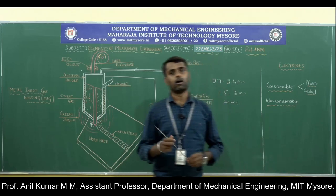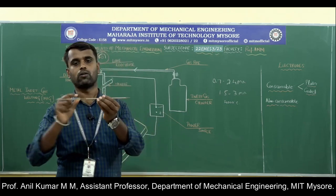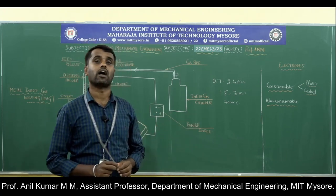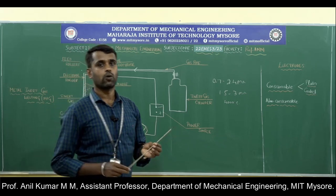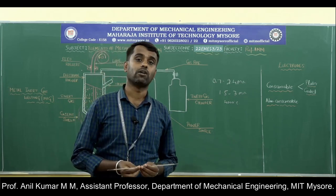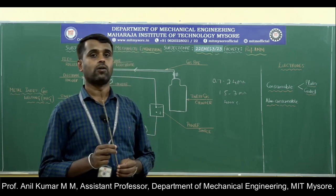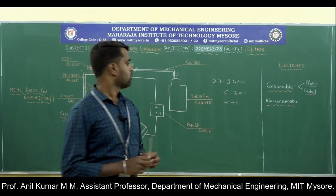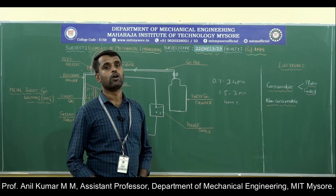The coated electrode is a metallic rod coated with flux material on its surface. This coated electrode is used in the electric arc welding process. Next, the non-consumable electrode is one that is not consumed during the welding process — it only stabilizes the electric arc.